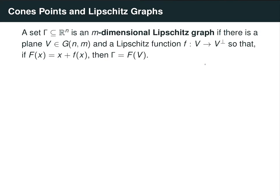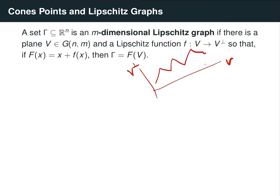It might be a little confusing why we defined m-dimensional cones using n-m dimensional planes, but this will become clear shortly. First, let's review what we mean by a Lipschitz graph. A set gamma is an m-dimensional Lipschitz graph if there is an m-dimensional plane v and a Lipschitz function f from v into v⊥ so that the image of x plus f(x) equals the set gamma. The picture is: v is the base plane, v⊥ is perpendicular, and the graph looks like a rotated version of a real-valued function's graph. Note that v⊥ can be more than one-dimensional, so there isn't necessarily a notion of above or below the graph.